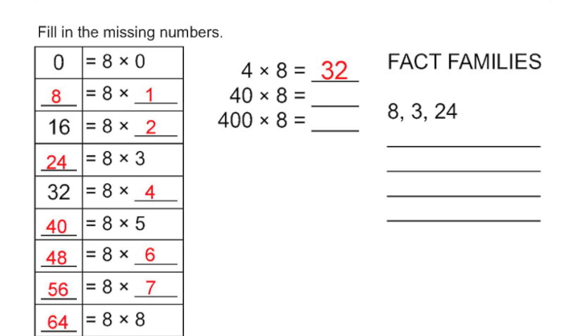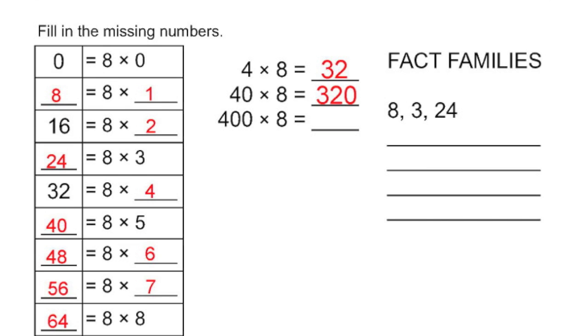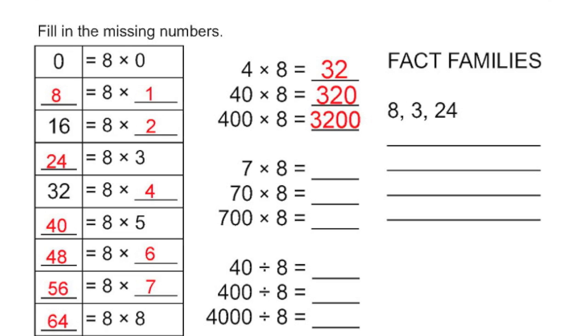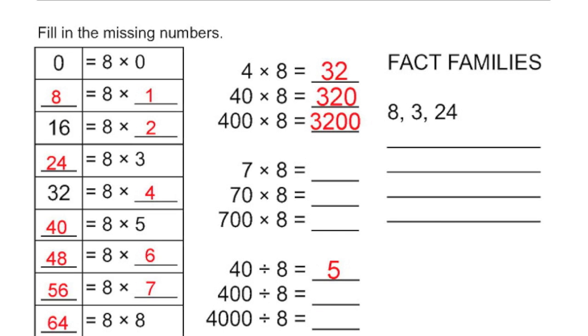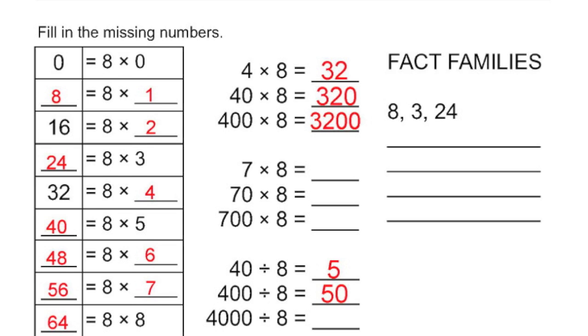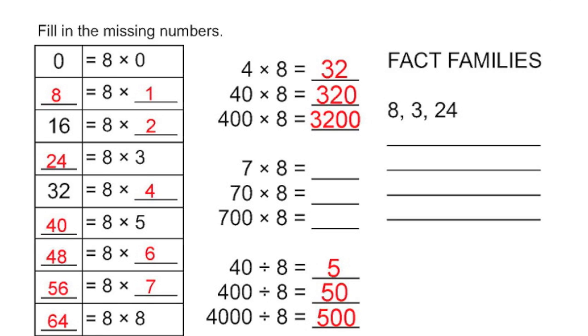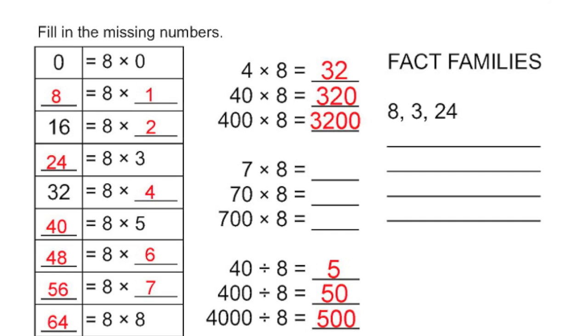400 times 8 is going to be 3,200. Let's do the division one. 40 divided by 8, I know that to be 5. So 400 divided by 8, there was an extra 0 from 40 to 400, so it's an extra 0 from 5 to 50. And 4,000 divided by 8 is 500. The pattern is the same way, just like the multiplication.